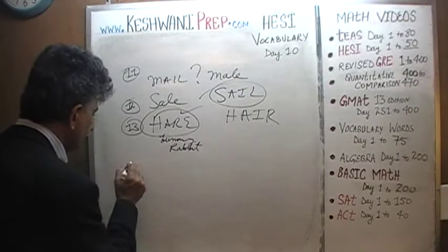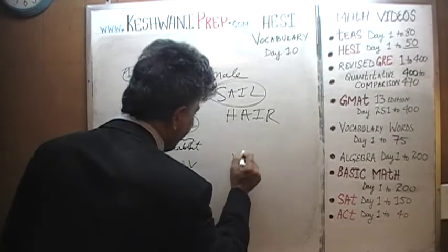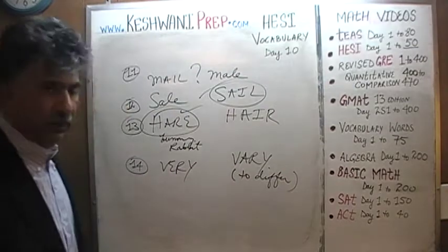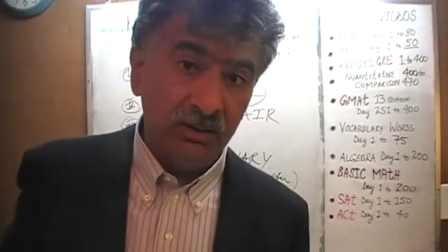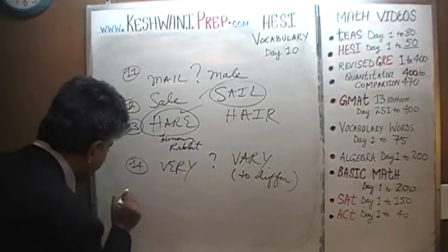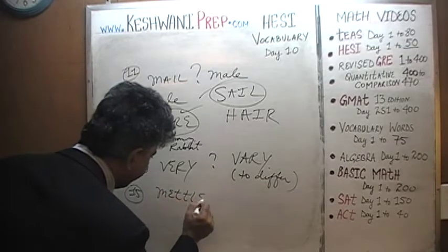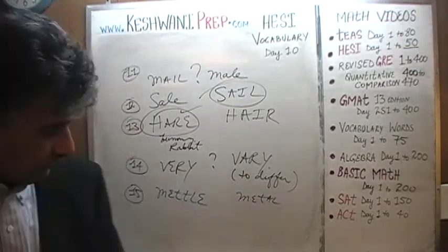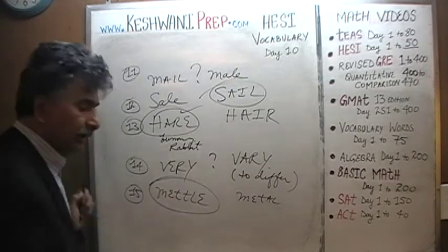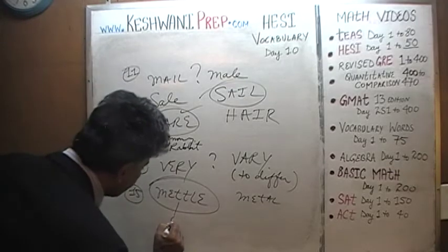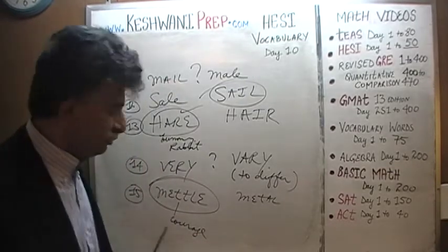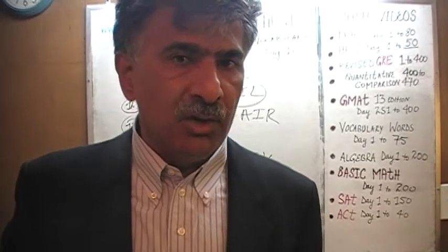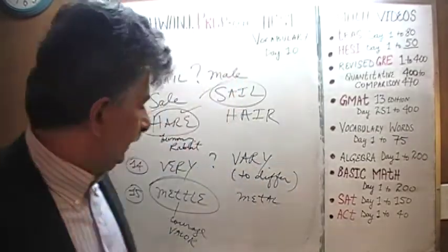Number fourteen: 'vary' and 'very' — 'vary' which means to differ. Again, this one is tricky and I'm not 100% sure if they are homonyms or not, but I think they are. Here's another tricky one — 'metal' and 'mettle.' M-E-T-T-L-E: to have mettle, to show mettle, means to show courage, to show valor, to be intrepid. If you show valor, if you show courage, you show mettle. You have mettle.